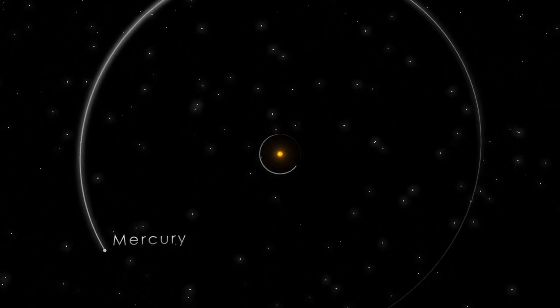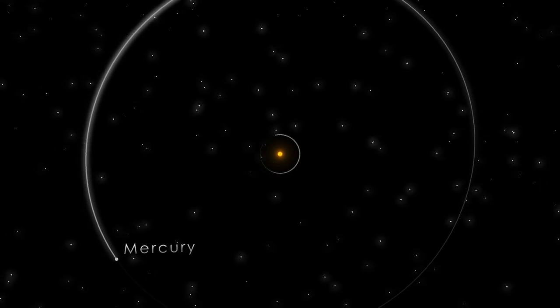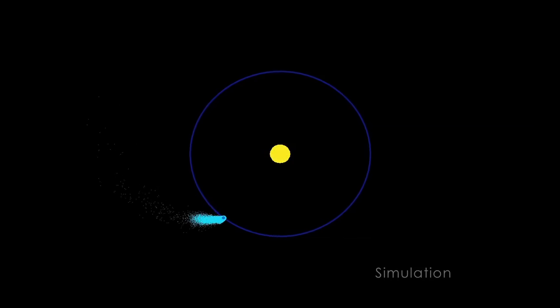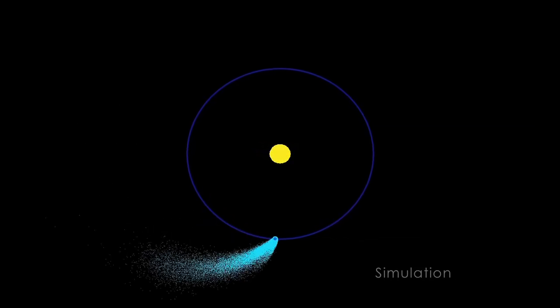But this planet pays a steep price for skirting its Sun. Sometimes, the star erupts with powerful flares that heat the planet's upper atmosphere so much that the gases simply escape.